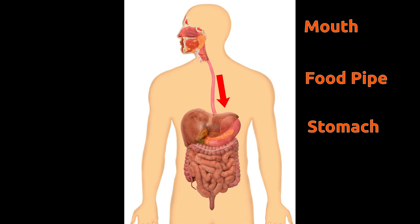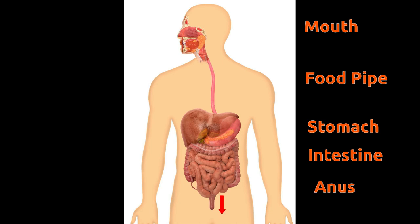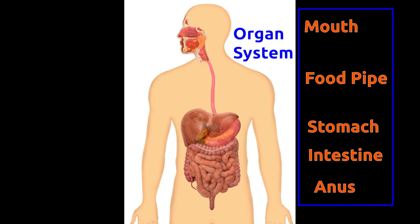From the stomach, food goes to the small intestine. Waste food is removed through the anus. All of the mouth, food pipe, stomach, small and large intestine, and anus organs form an organ system. All these organs work together towards absorbing essential materials from food.